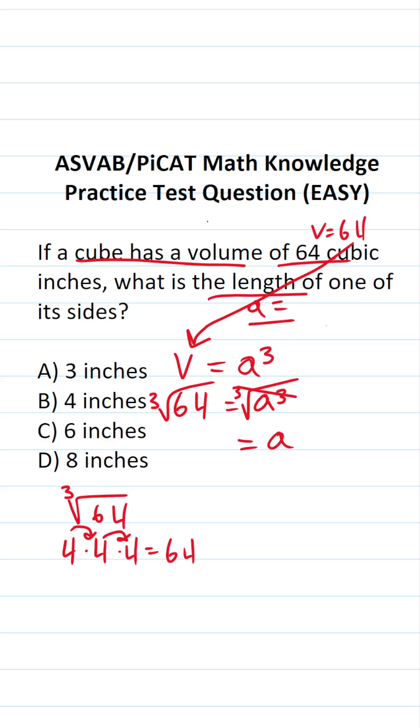4 times 4 times 4 is the same thing as 4 to the third power. So let's go ahead and replace 64 with 4 to the third power. This becomes the cube root of 4 to the third power. These cancel each other out, leaving us with just 4 over here. So we can see that the length of one of the sides of this cube is going to be B, 4 inches.